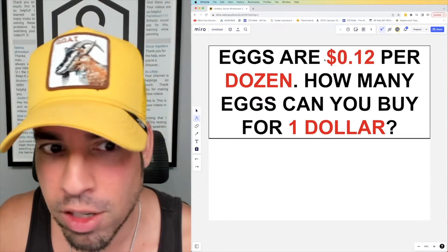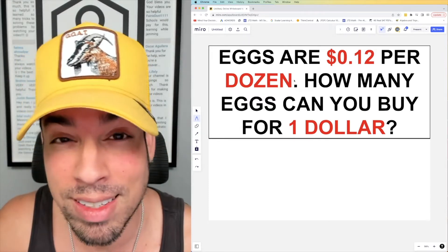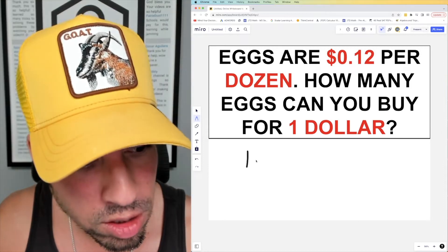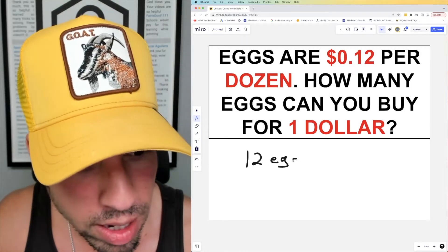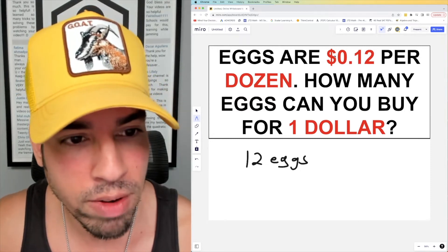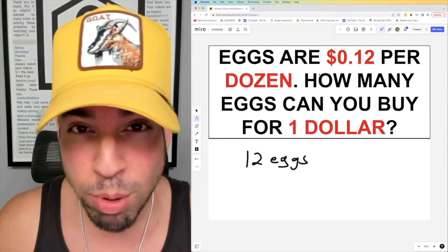So you want to start first with the fact that eggs are 12 cents per dozen. So the question is, how many eggs are in a dozen? A dozen is 12 eggs. So if you don't know that, this problem is pretty tricky. But now that we know that a dozen is 12 eggs, we can figure out the cost per one egg.